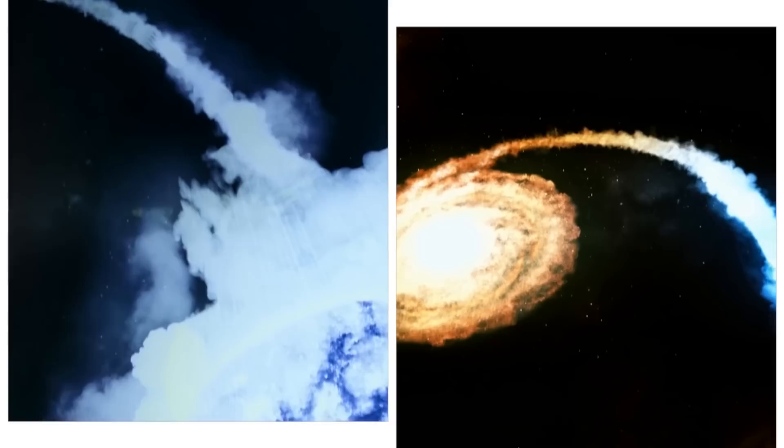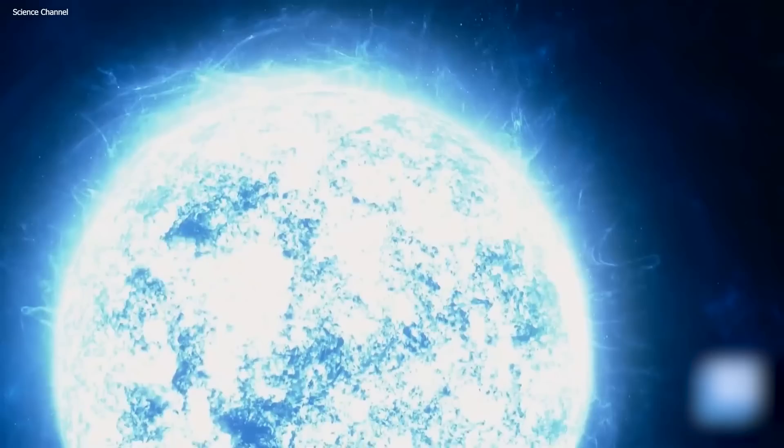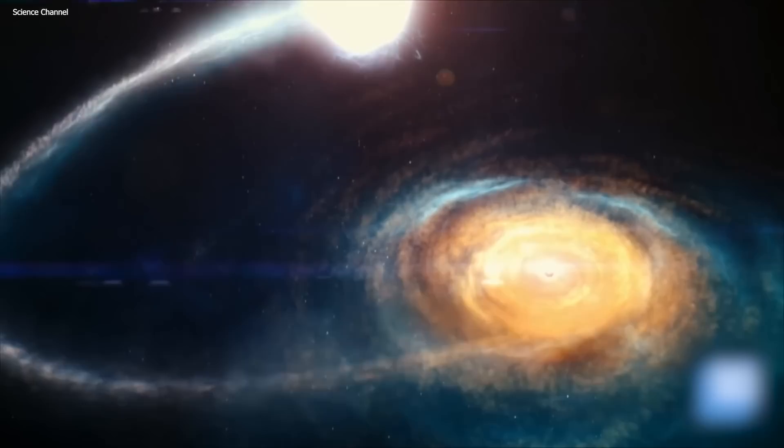Type 1 supernovas occur when a white dwarf star, which is the dense remnant of a low-mass star, accretes matter from a companion star until it reaches a critical mass. This triggers a runaway nuclear fusion reaction that causes the star to explode. The star is always on borrowed time, and when it explodes, it causes a lot of mayhem, but nothing compared to what happens with type 2.